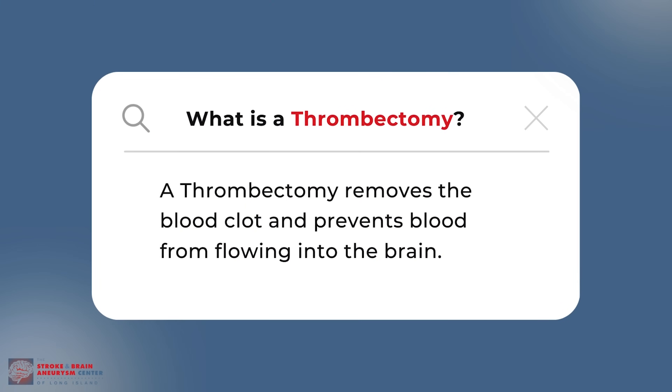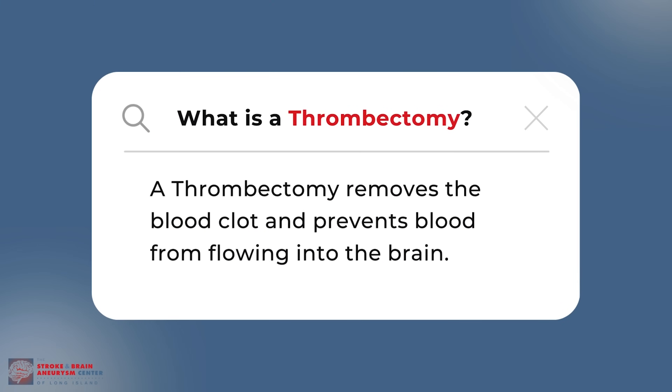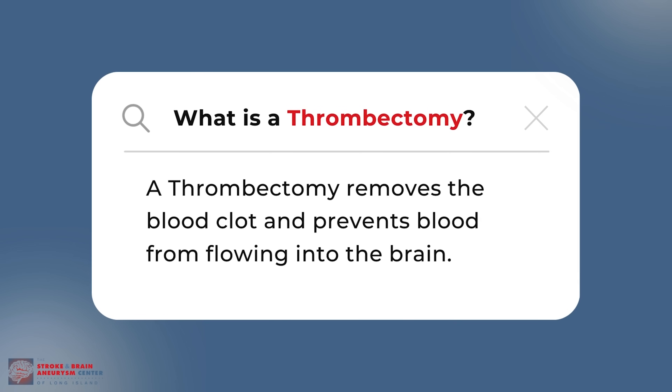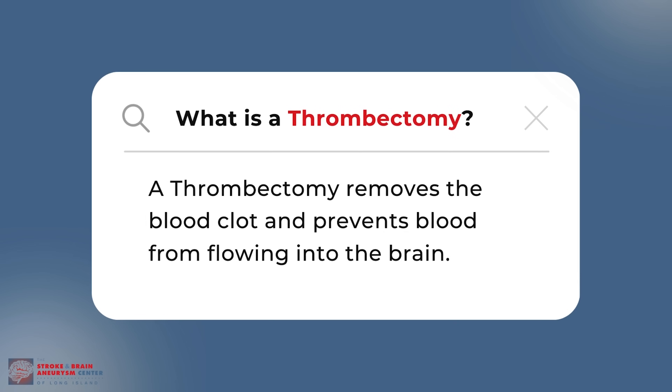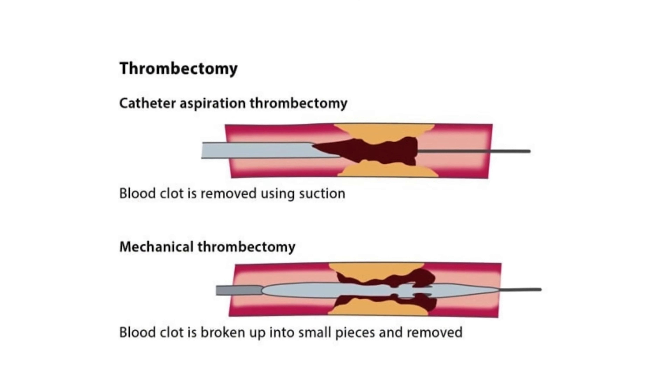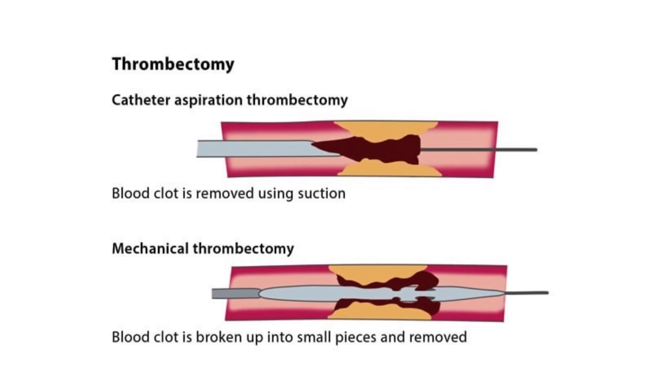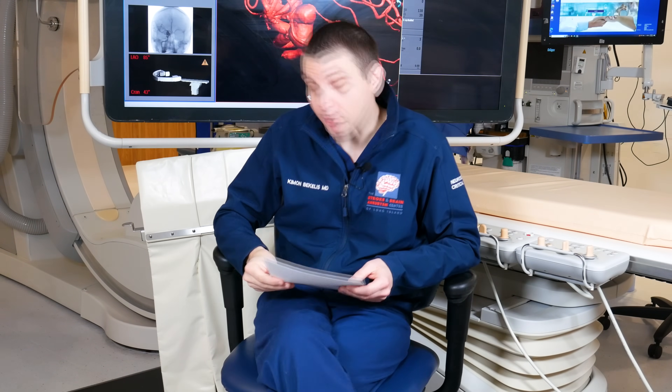In the setting of an ischemic stroke, some folks ask what is a thrombectomy. A thrombectomy is the removal of the blood clot that prevents blood from flowing into the brain. We do that mechanically by navigating catheters and wires through the groin all the way up into the brain, either sucking the clot out with special suction catheters or using a stent — think of it as a fishnet — to grab the clot and remove it.